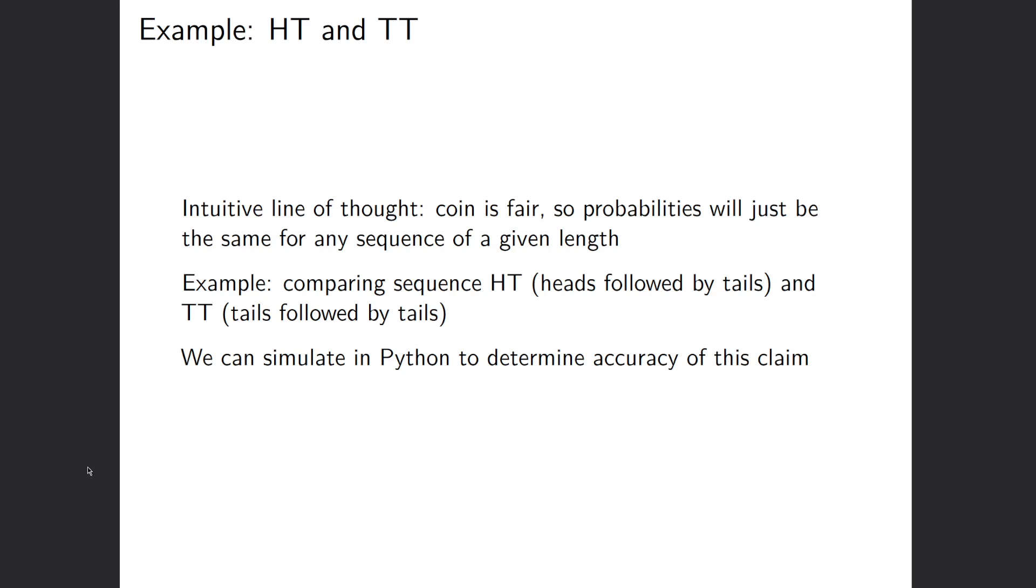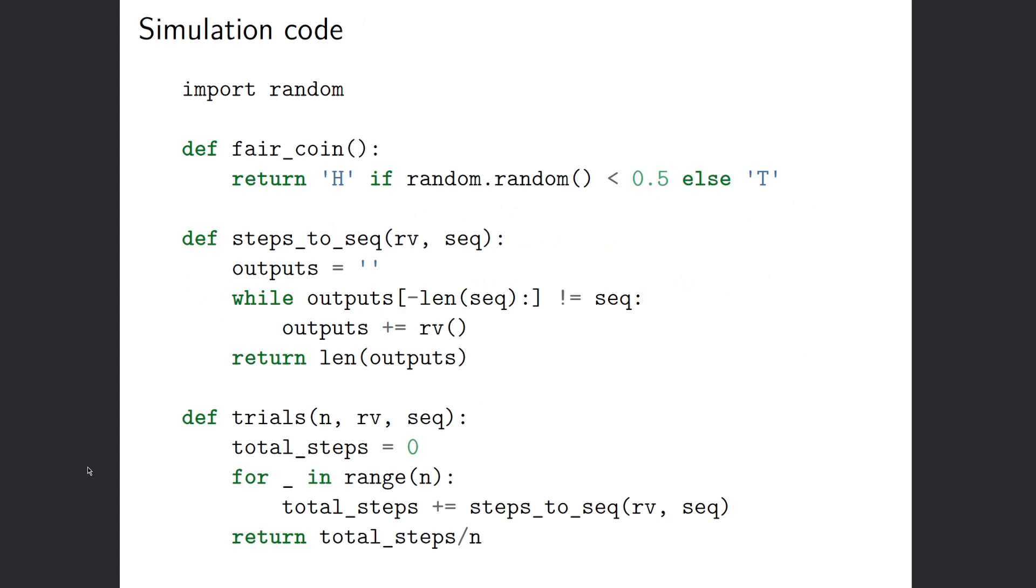So we'll test the accuracy of this claim using a simple Python script. So here, we just import random. We've got some fair coin that returns H if our random variable is less than 0.5, and otherwise, it returns T.